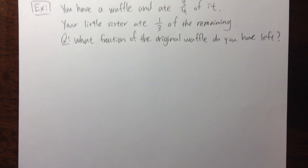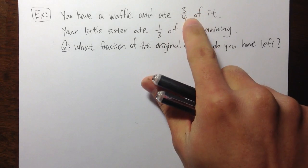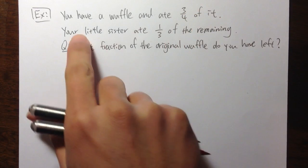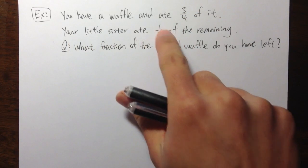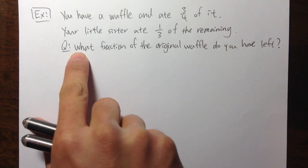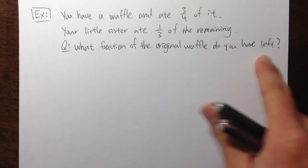Let me do an example before I talk about question number 12. This example is going to help us understand question number 12 better. The situation is this: you have a waffle, and you ate three over four of it — three quarters of it. And your little sister ate one third of the remaining. The question is: what fraction of the original waffle do you have left?